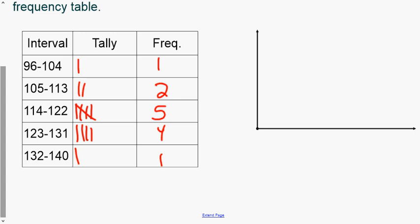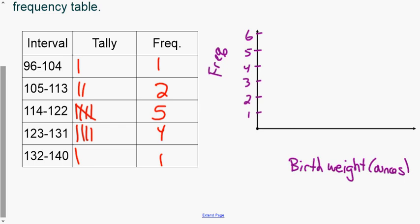You should have gotten: 1 for the first interval, 2 for the second, 5 for the third, 4 for the fourth, and 1 for the last. Since the maximum frequency is 5, your y-axis goes by ones up to 5 — no need to label bar tops. Label the x-axis 'birth weight in ounces.' Use your ruler to make all bars the same width, draw the bars at heights 1, 2, 5, 4, 1, and shade them.